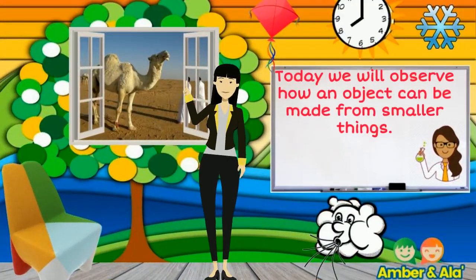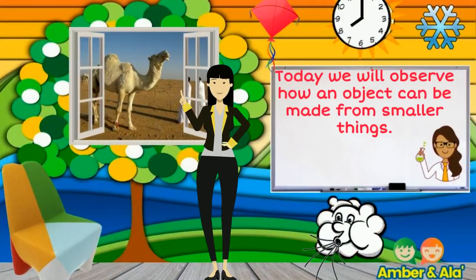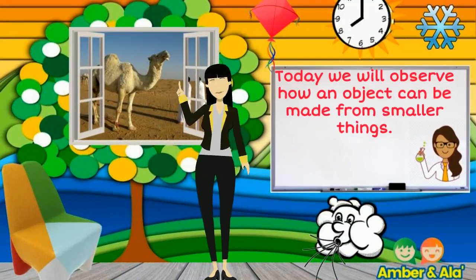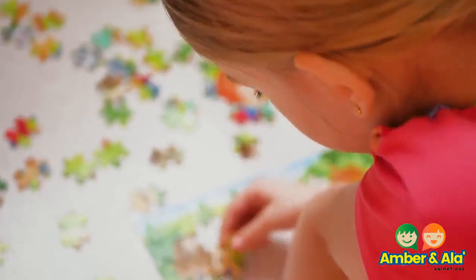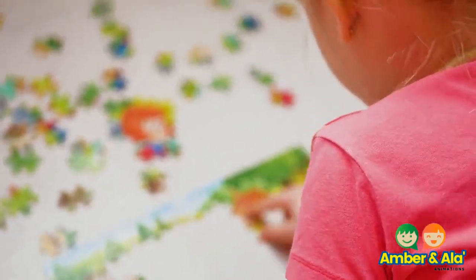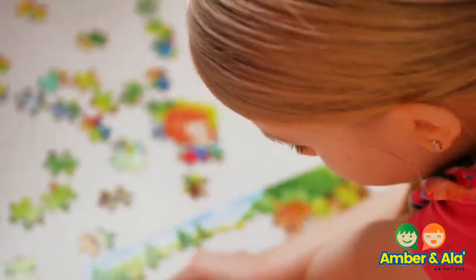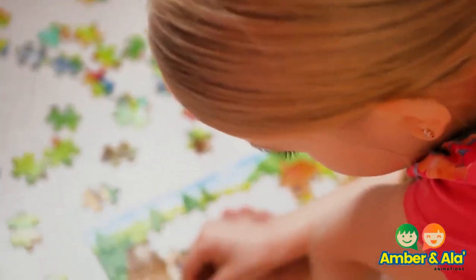Today we will observe how an object can be made from smaller things. This little girl is working on a puzzle. A puzzle is a picture broken up into smaller pieces. You put the smaller pieces together to make a big picture.